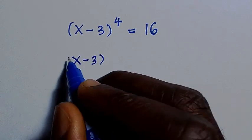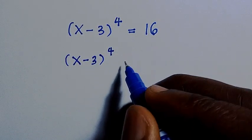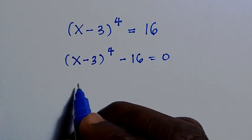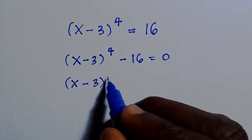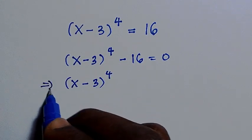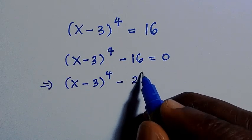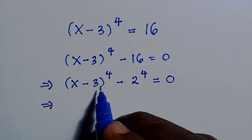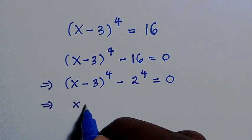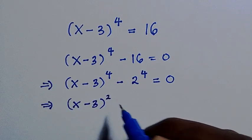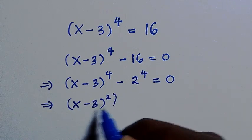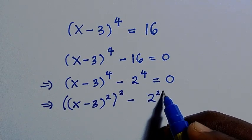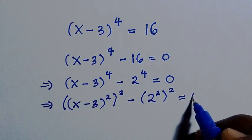So the first thing is we write (x minus 3) to the power of 4, and we take this 16 as minus 16, so everything equals 0. Following that, (x minus 3) to the power of 4 minus 2 to the power of 4 equals 0. We can rewrite this as (x minus 3) squared, all raised to the power of 2, minus 2 squared, all raised to the power of 2, equals 0.